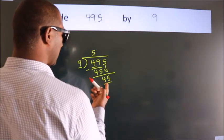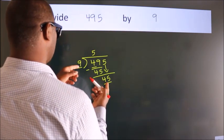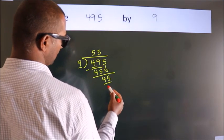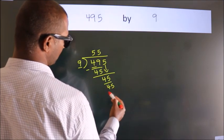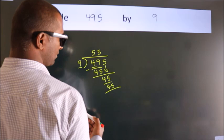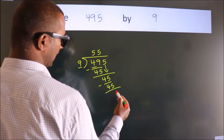When do we get 45 in the 9 table? 9 fives, 45. Now we subtract. We get 0.